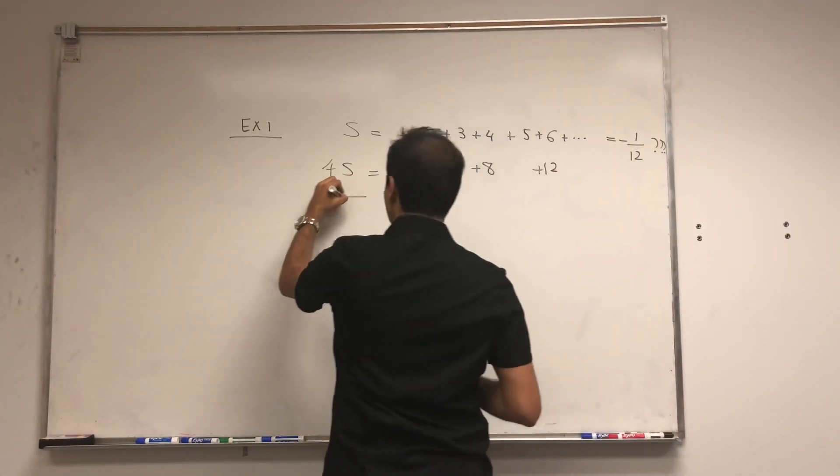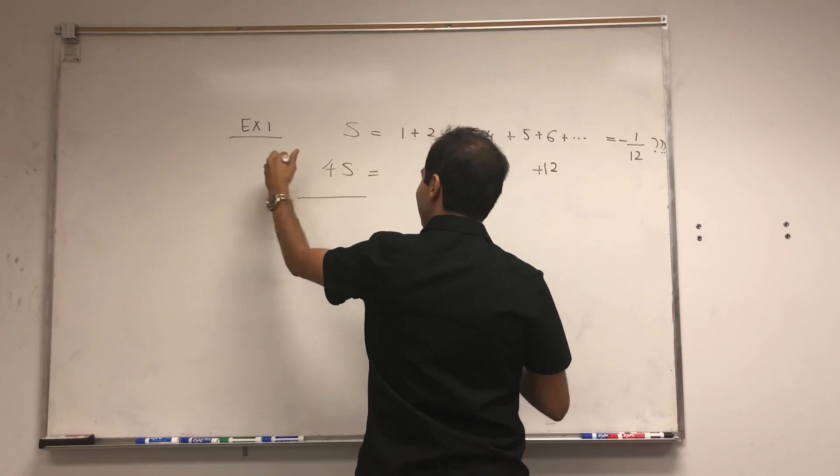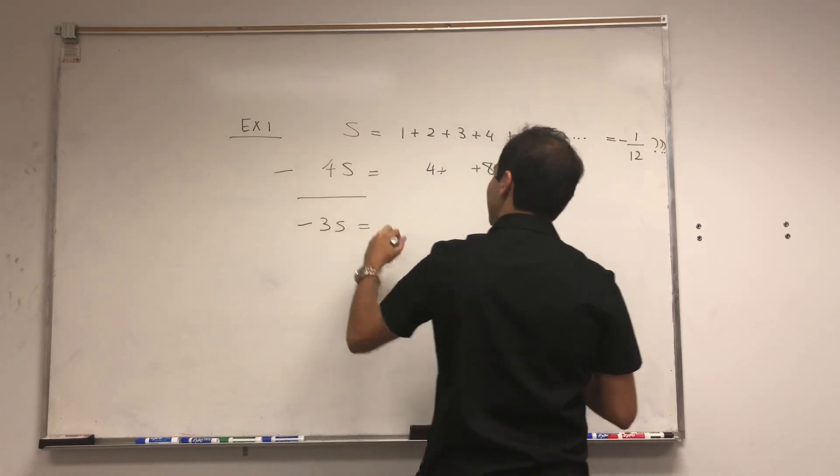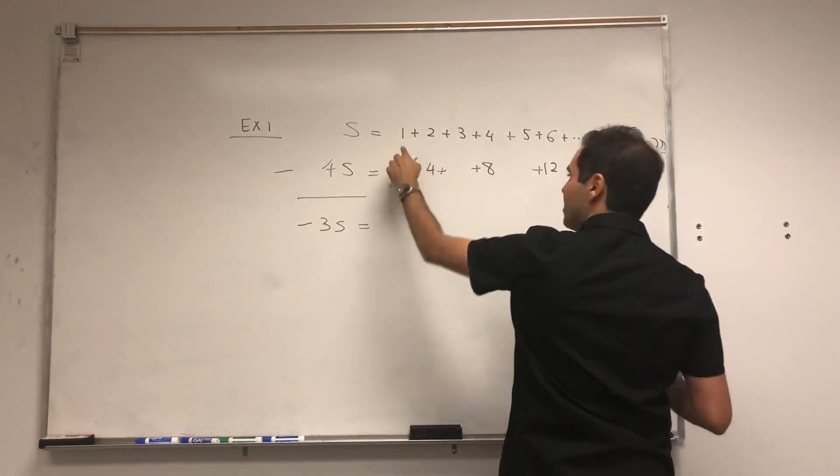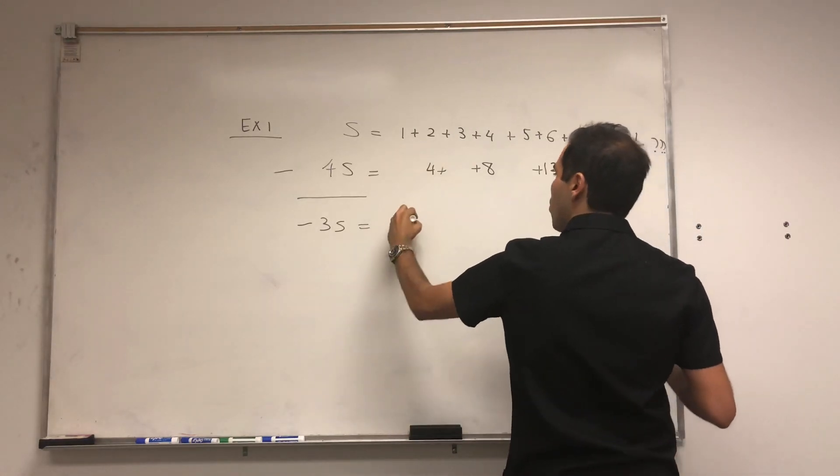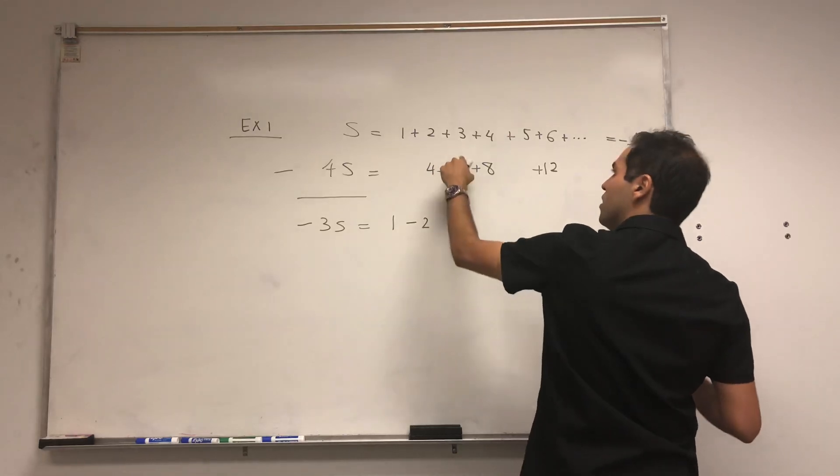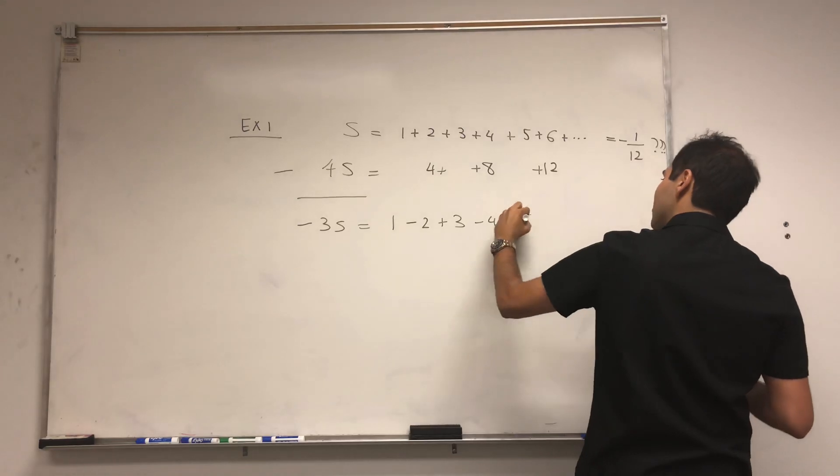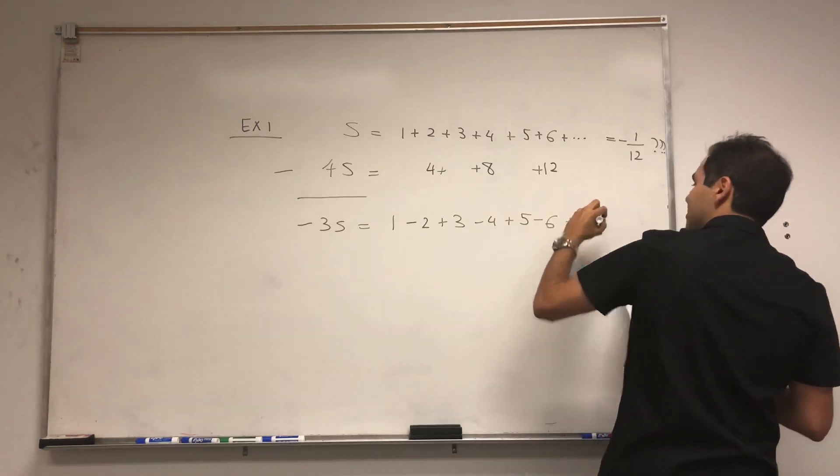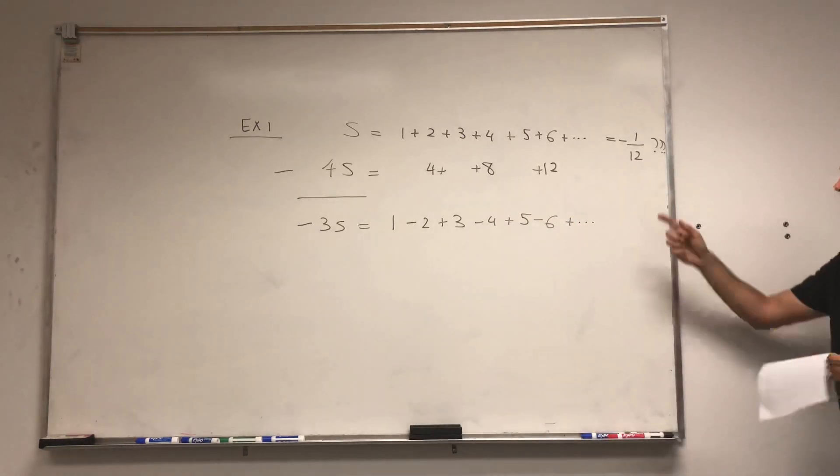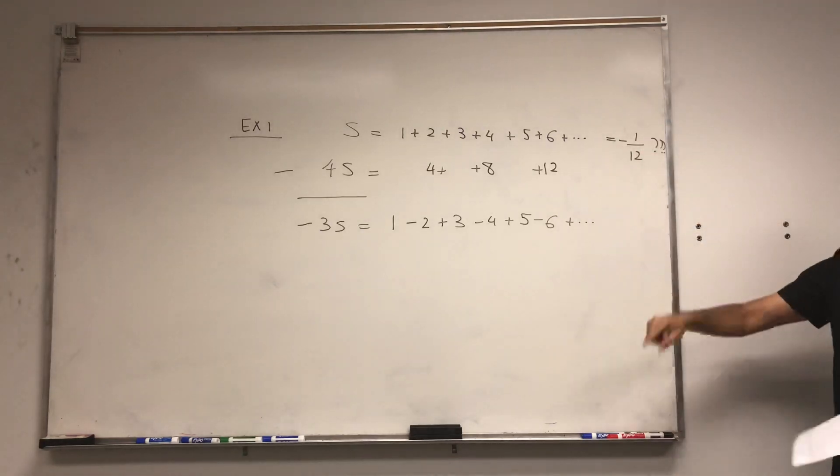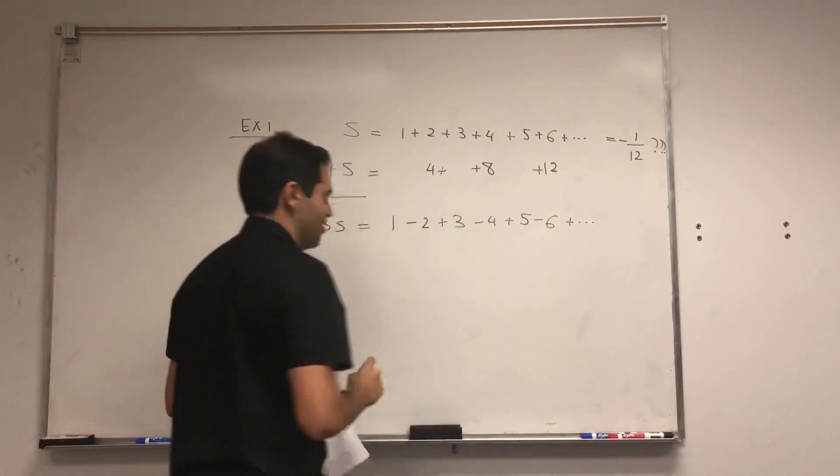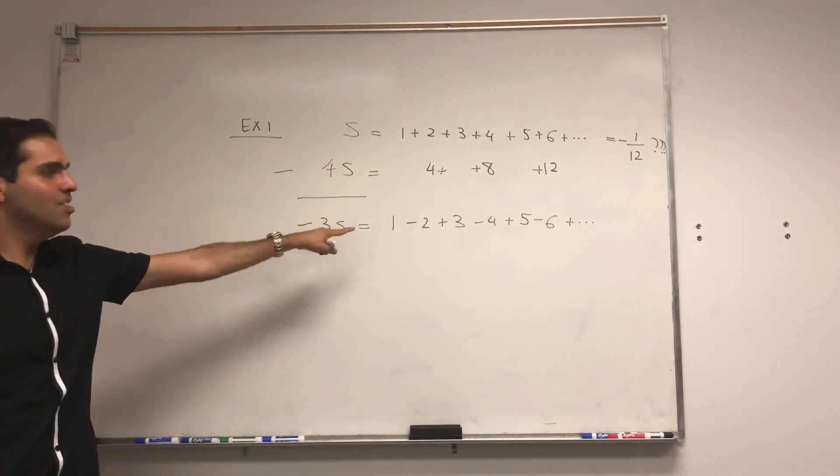And then let's subtract that. So if you do this minus this, on the one hand, you get minus 3S. On the other hand, you get, well, 1, 2 minus 4, which is minus 2, 3 minus 0, which is 3, and then minus 4 plus 5, minus 6, etc. So if you subtract those two, again, naively, assuming that commutativity and associativity hold, then you get this.